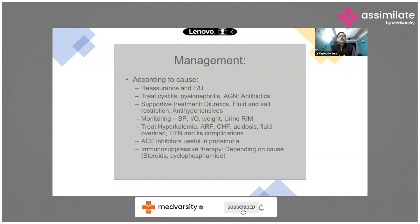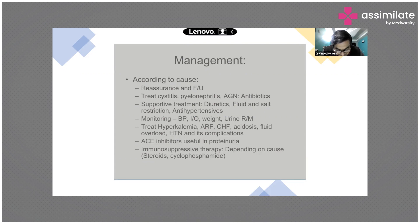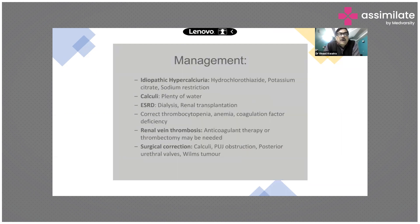If an autoimmune disorder is diagnosed — confirmed with ANA, dsDNA, and complement levels — think about steroids and immunosuppressants like cyclophosphamide or azathioprine, which are commonly used nowadays. Surgical corrections can be done for renal vein thrombosis; anticoagulant therapy and thrombectomy may be needed, which the urologist performs.